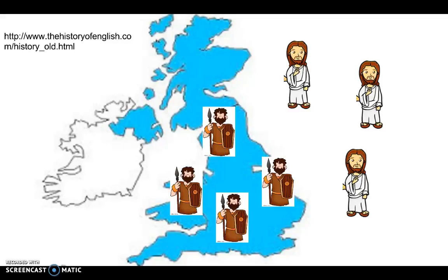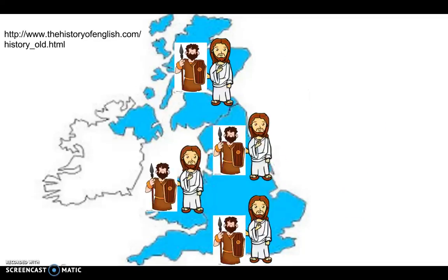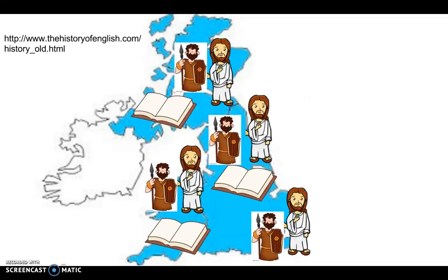In 597 AD, another invasion occurred — this time of a religious kind. Fifty missionaries were sent from Rome to England to convert the pagan Anglo-Saxons to Christianity. The spread of Christianity caused differences in culture and literature. Previously, the Anglo-Saxons had used runes as writing, but Christian missionaries introduced the Roman alphabet. Rune sounds were even incorporated into the new language, though many of the new words within Old English were just related to religion.